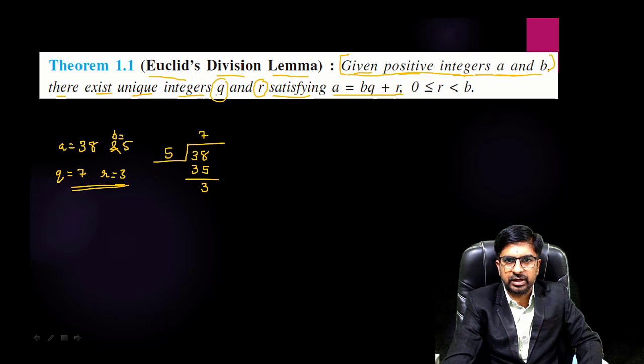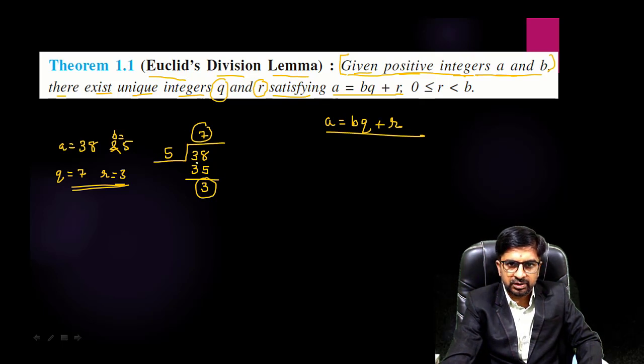So can I write this as 38 equals 5 into 7? 5 sevens are 35 plus 3.